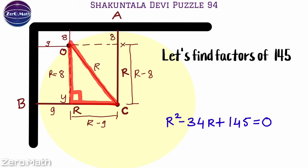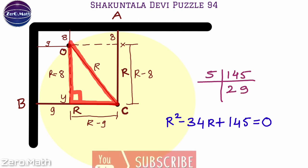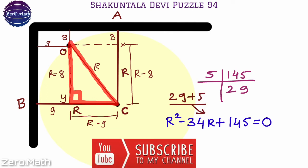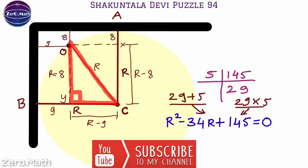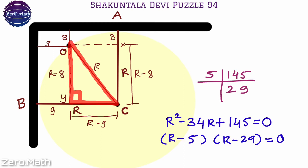Let's find the factors of 145. Since 145 is divisible by 5, dividing gives us 29. We can see that 29 + 5 = 34 and 29 × 5 = 145, so we have our factors. We can rewrite the equation as (r − 5)(r − 29) = 0.